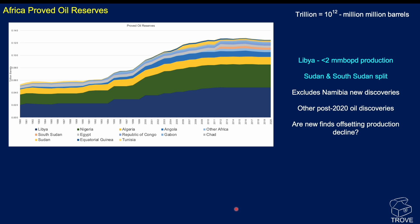Here's Africa. Libya at the bottom has certainly been one of the major producers over the last four decades, though stabilized in terms of reserves. Nigeria is the second entry on the axis. Libya has an ambition to reach 2 million barrels of oil per day production through a new licensing round. You can see the split between South Sudan and Sudan creating an anomaly. This data excludes recent discoveries in Namibia and other post-2020 finds, since the statistical review only goes back to 2020.